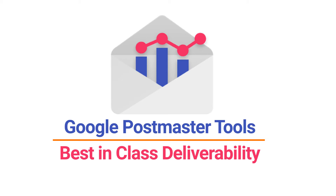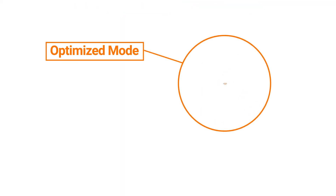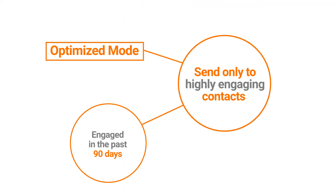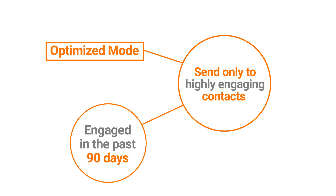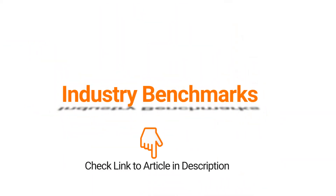On other email tools, you'd have to pay hundreds of dollars per month to get an IP with a high reputation. While in the optimized mode, you can only send to contacts who have engaged with you in the past 90 days, meaning you are only sending to your highly engaging contacts. Sandfox bases its decision on the benchmarks that can be found in this article.